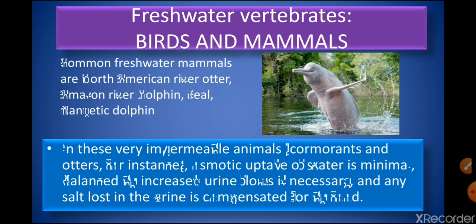Finally, freshwater birds and mammals — such as Amazon river dolphins, Gangetic dolphins, and otters — have comparatively impermeable skin, which minimizes endosmosis. The salts excreted in higher amounts are then regained by drinking water. This concludes the discussion on problems of salt balance in aquatic vertebrates. Thank you.